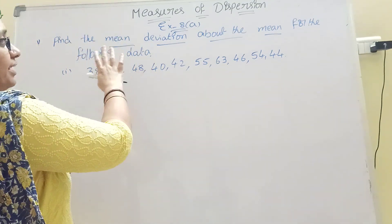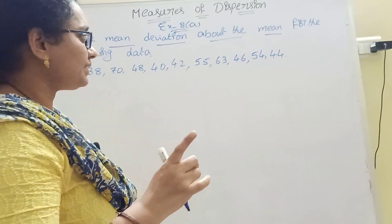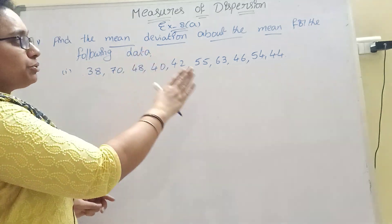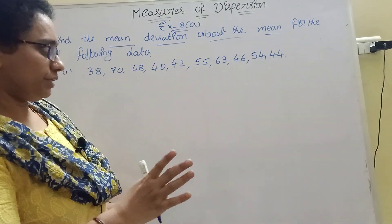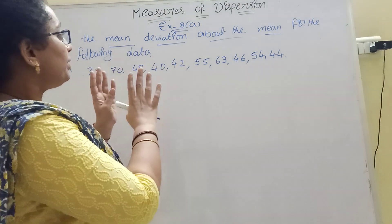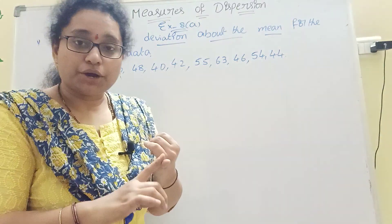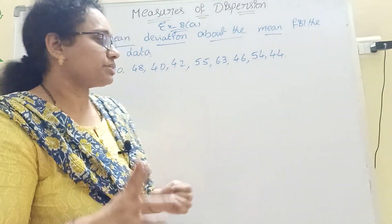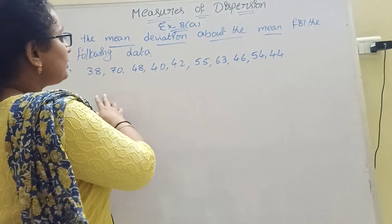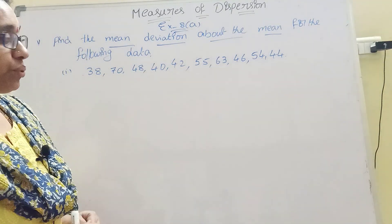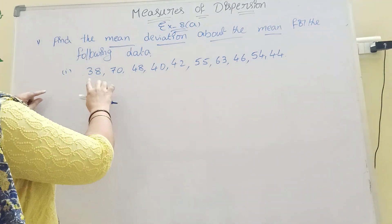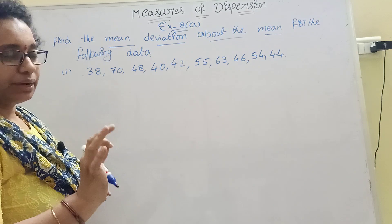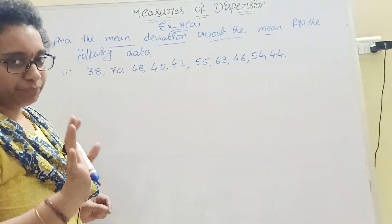Now let's come to the point. I am explaining the first question: mean deviation about the mean. Look at this data — there are two types: ungrouped data and grouped data. Here it is ungrouped data.